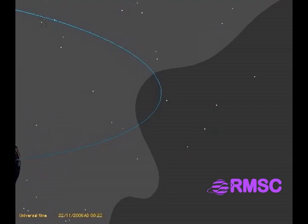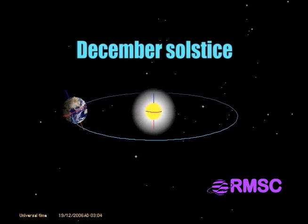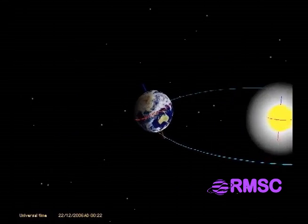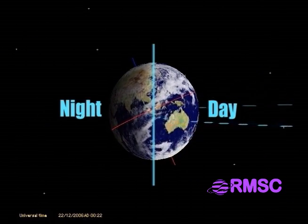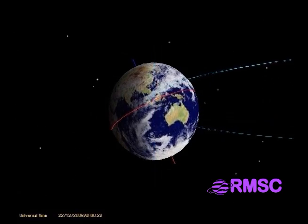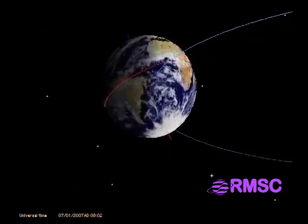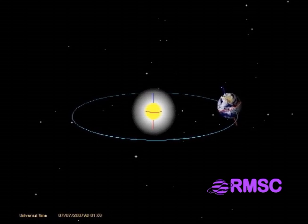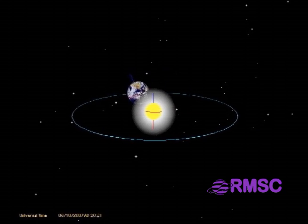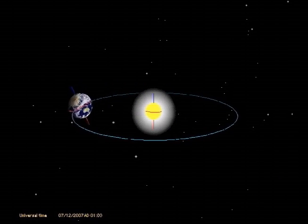Three months later, the December solstice. That same tilt of the Earth now causes the Northern Hemisphere to get much less sunlight than the Southern Hemisphere. It's winter in the Northern Hemisphere and summer in the Southern Hemisphere. Earth's Northern and Southern Hemispheres always have opposite seasons. The seasons are not caused by changes in distance between Earth and Sun — they are caused by the tilt of Earth's axis compared to its orbit.